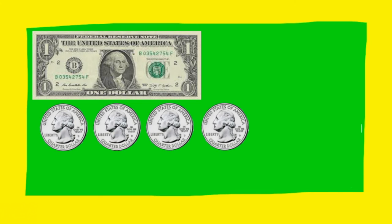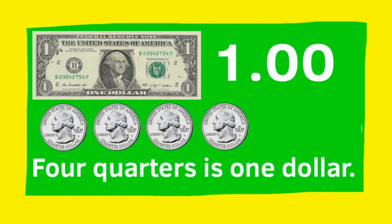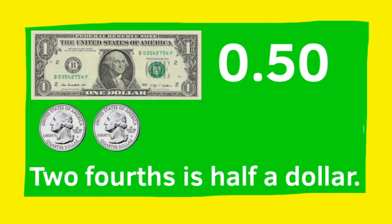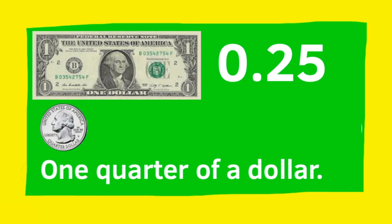Imagine 1 dollar. 4 quarters is 1 dollar. 3 quarters or 3 fourths of a dollar is 75 cents. 2 quarters or 2 fourths of a dollar is 50 cents. 1 quarter or 1 fourth of a dollar is 25 cents.